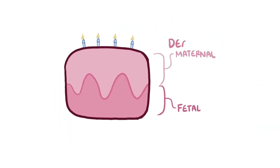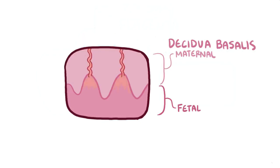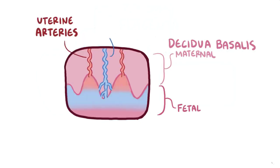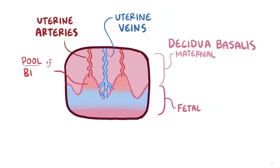The maternal layer, the decidua basalis, is literally a flattened-out bag of blood with uterine arteries delivering blood in and uterine veins pulling blood out. But unlike other parts of the circulatory system where blood stays within narrow blood vessels, the decidua basalis is a huge pool of blood.